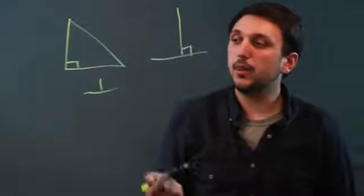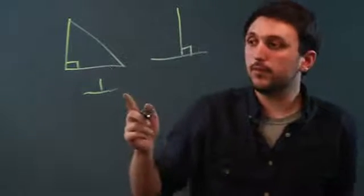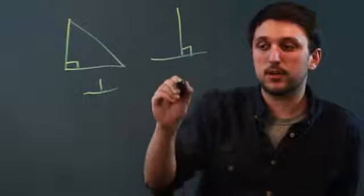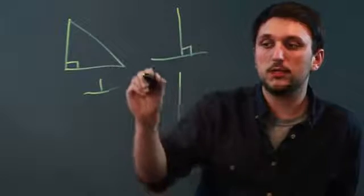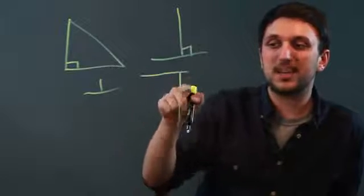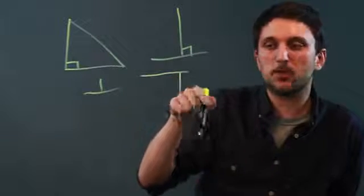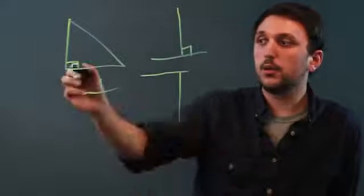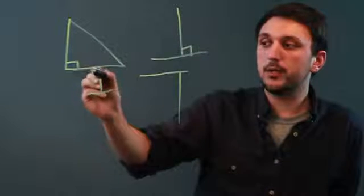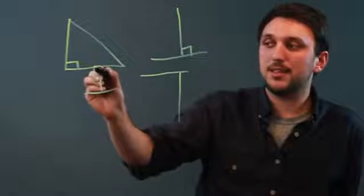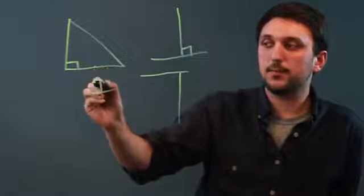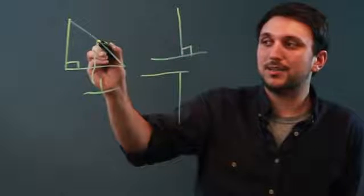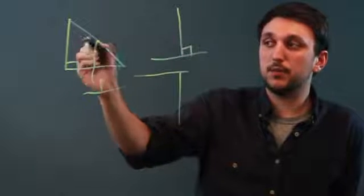Now, the way in which we find perpendicular bisectors — a bisector are two lines that intersect and cut something perfectly in half. So, the only way we can do that is if we bisect this line, bisect the hypotenuse,